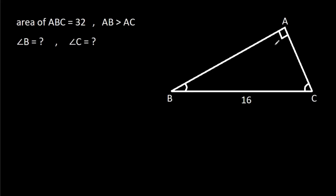In this video, we have been given a right angle at A in triangle BAC, and BC is 16 and the area of ABC is 32. We have to find angle B and angle C.